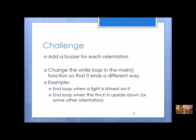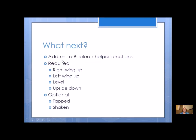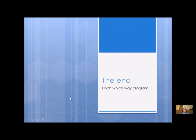If you've got everything working and have extra time, try some challenges: add a buzzer sound for each orientation — a different buzz for each way, just like the different bead colors. For a real challenge, change the while loop so instead of counting ten times, find a different way to end it — maybe by shining a light on the light sensor or when the Finch is upside down. The required orientations are beak up, beak down, right wing up, left wing up, level, and upside down. Optional additions are tap and shake detection.